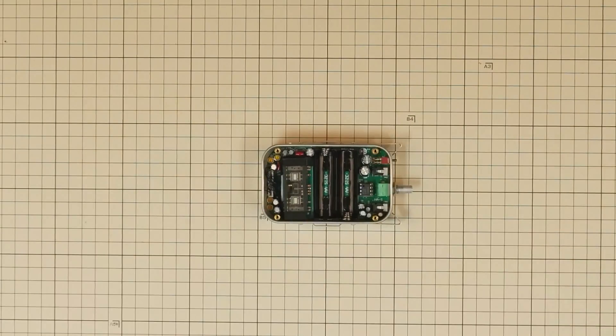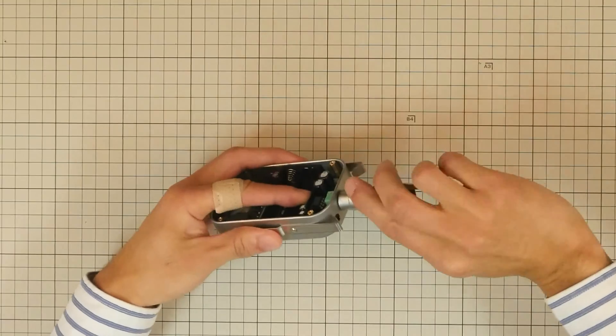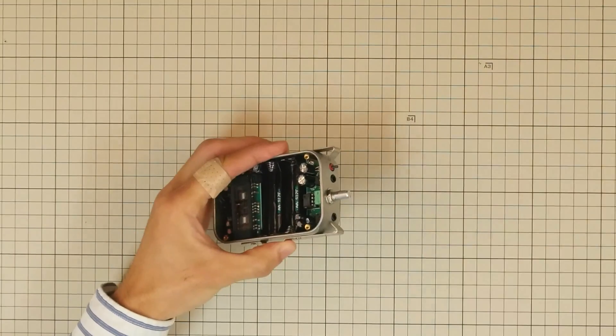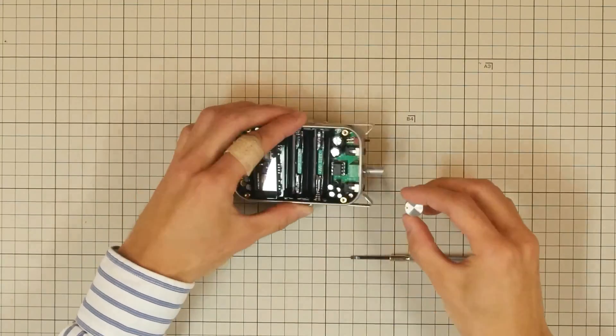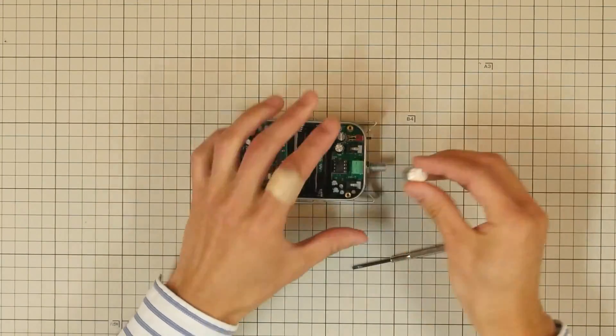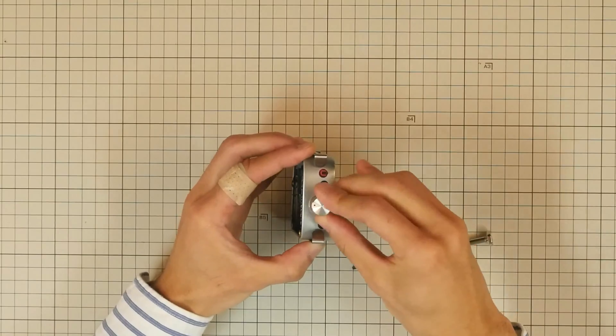When that's done, re-tighten the volume nut to affix the volume permanently. Now it's time to add a knob onto the volume control. Attach the knob to the volume and tighten the fastener screw with a hex wrench.